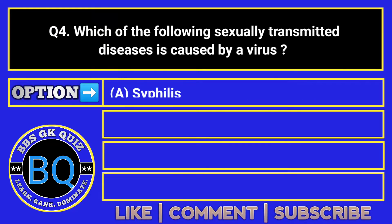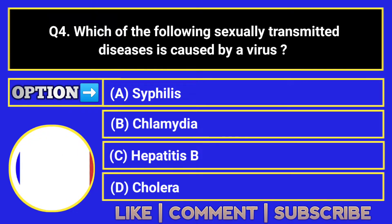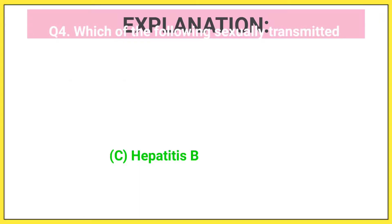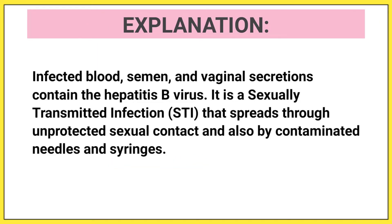Which of the following sexually transmitted diseases is caused by a virus? The correct answer is option C. Infected blood, semen, and vaginal secretions contain the hepatitis B virus. It is a sexually transmitted infection (STI) that spreads through unprotected sexual contact and also by contaminated needles and syringes.